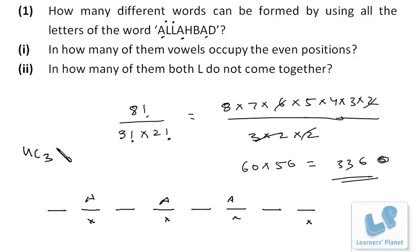For the remaining, how do we arrange? If we take out 3 A's, we are left with 5 letters: L, L, H, B, and D. So 5 letters can be arranged in 5 factorial ways. Further, L is repeated, so we divide by 2 factorial.